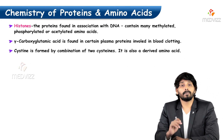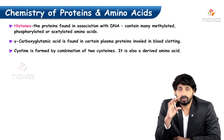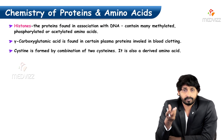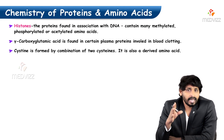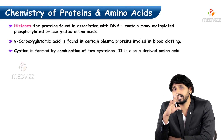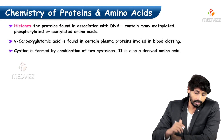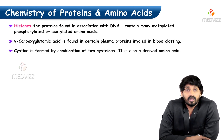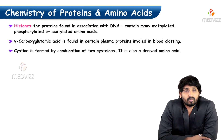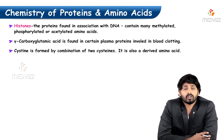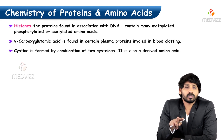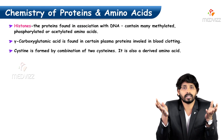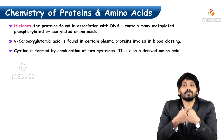Histones are proteins found in association with DNA. They wrap around nucleic acids and give stability to them. They contain many methylated, phosphorylated, or acetylated amino acids. Gamma-carboxyglutamic acid is found in certain plasma proteins involved in blood clotting. This carboxyglutamic acid, in association with vitamin K, grabs calcium. Glutamic acid has 2-carboxy groups, giving it 2 valences, so it carries calcium and helps in blood clotting.